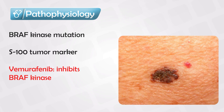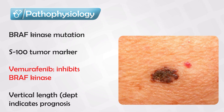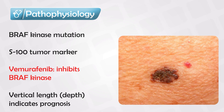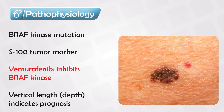Vemurafenib also improves survival rate and long-term outcomes. When it comes to melanoma, the depth is much more important than the horizontal or superficial spread. We can describe a melanoma lesion using two terms: horizontal spread, meaning the lesion spreads superficially over the skin, and vertical spread, which indicates the depth of the lesion. The greater the depth, the worse the prognosis.